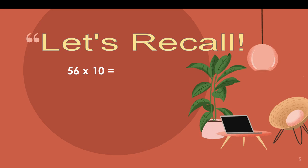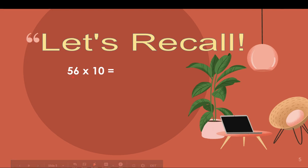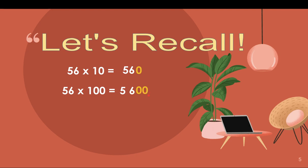Suppose we want to multiply 56 by 10 — what answer will we get? It is a useful strategy to focus on non-zero numbers first. So 56 times 1 gives us 56, and then we append one zero at the end. For 56 times 100, focus on the non-zero numbers: 56 times 1 is 56 with 2 zeros at the end, or 5,600. So multiplying 56 by 1,000 will give us 56 with 3 zeros at the end, or 56,000.